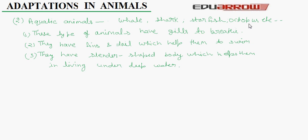What are the features? These type of animals have gills to breathe. They have fins and tail which help them in swimming with water. They have slender shaped body which helps them in living under deep water.